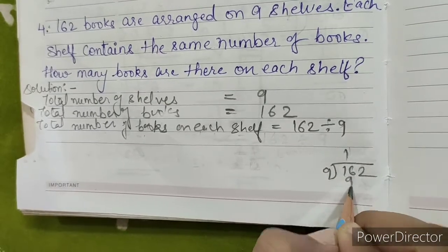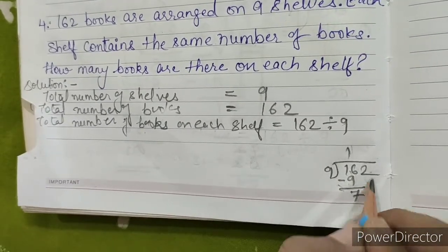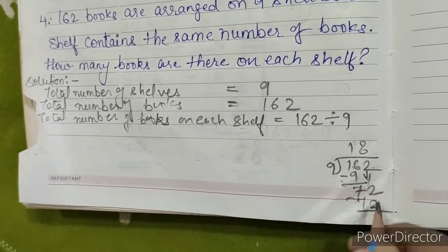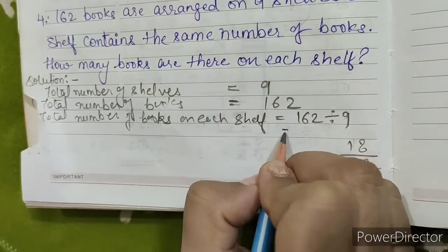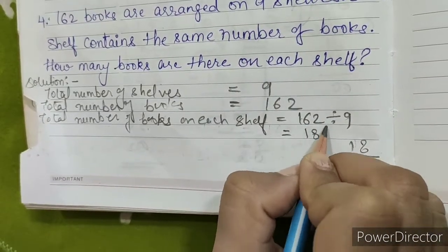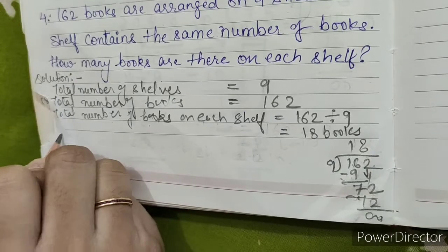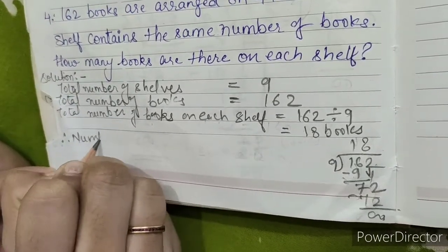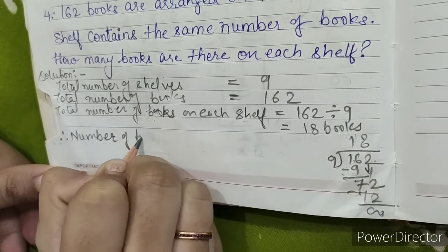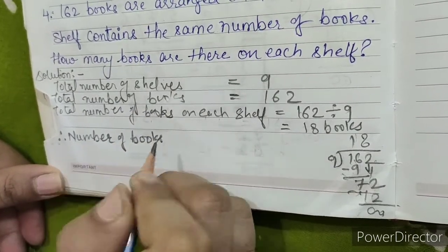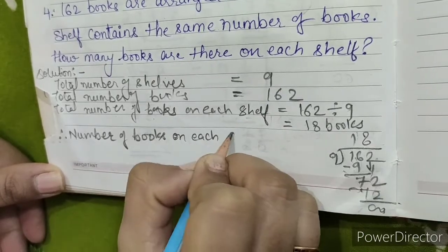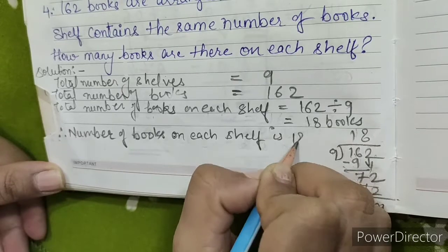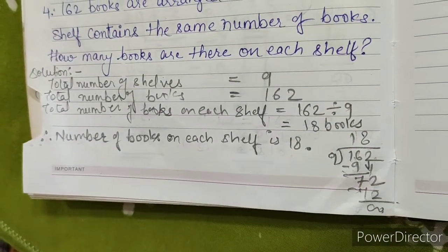9 ones are 9. 16 minus 9 gives 7. 9 eights are 72. 72 minus 72 is 0. So, 18 books. Therefore, the number of books on each shelf is 18. This is our answer.